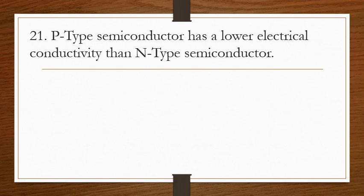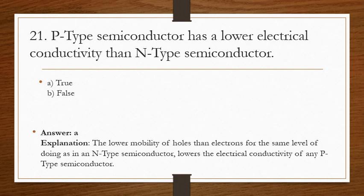Question 21: P-type semiconductors have a lower electrical conductivity than N-type semiconductors — true or false? The answer is A, true. Holes are the majority charge carriers in P-type semiconductors. They have a lower mobility compared to that of electrons for the same level of doping. Hence, P-type semiconductors have a lower electrical conductivity than N-type semiconductors.